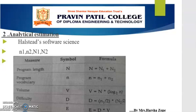Halstead's software science is based on the analytical estimation model. Halstead's complexity measurement was developed to measure a program module's complexity directly from source code. The Halstead's measures are based on four scalar numbers derived directly from a program's source code.